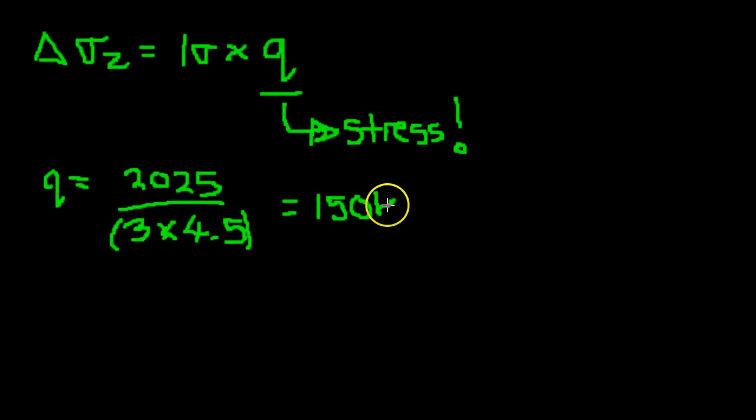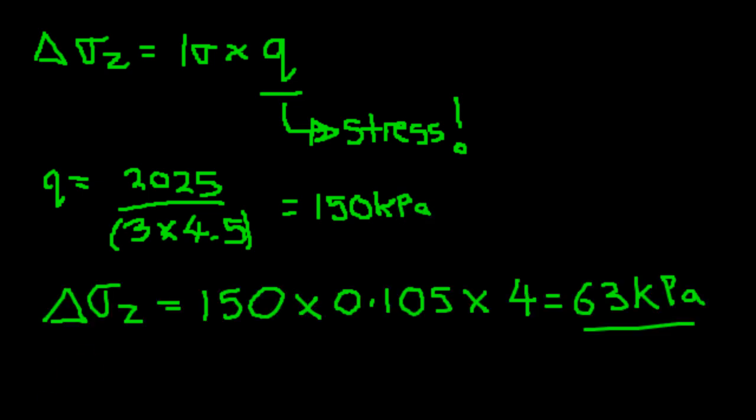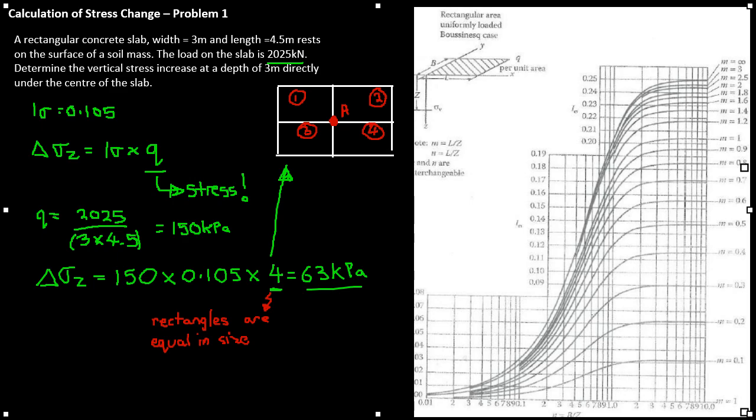Delta sigma Z is equal to Q, which is 150, times our influence factor, which we found to be 0.105. But remember, we have to times this by 4 because we have 4 equal sized rectangles.